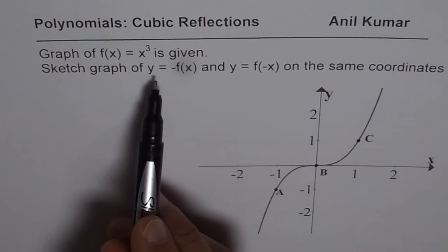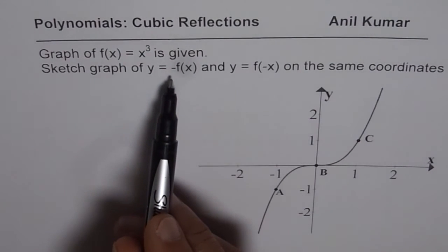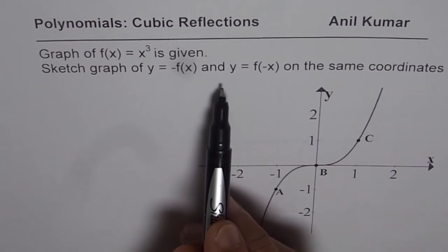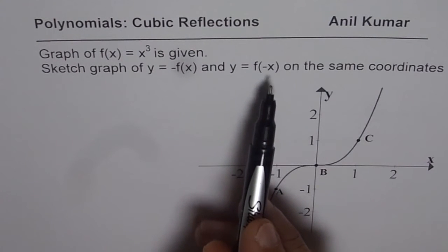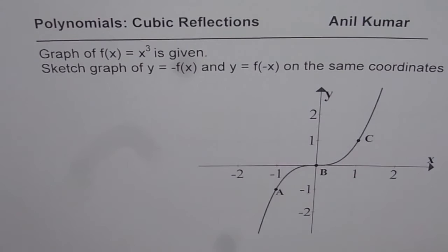Sketch graph of y = -f(x) and y = f(-x) on the same coordinates. This is what you need to do and once you do it, you will understand what really happens when you reflect cubic functions on x-axis or on y-axis. You can pause the video, sketch the graph and then look into my solution.